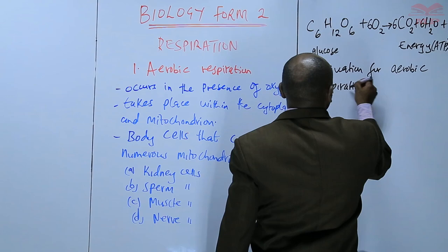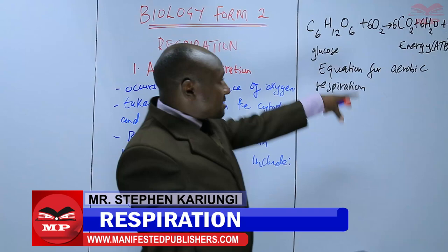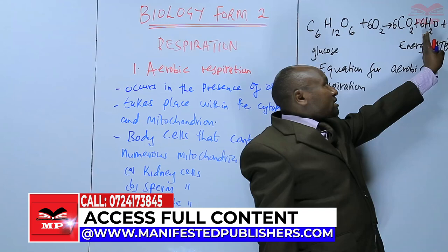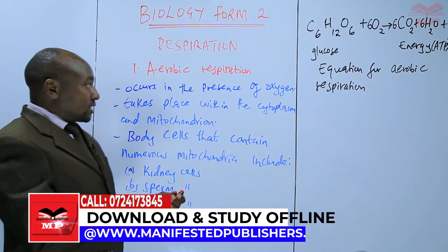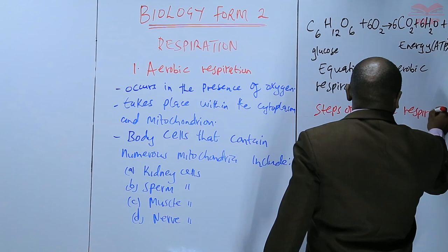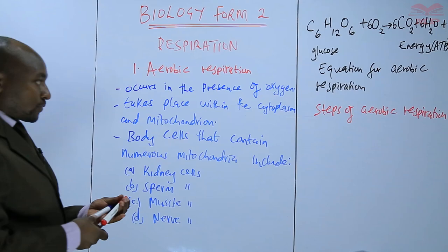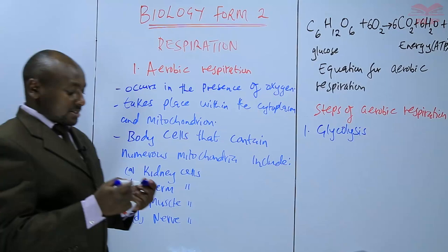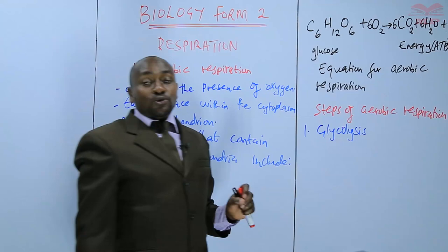In as much as that equation summarizes aerobic respiration, aerobic respiration is not just a one-step process whereby glucose combines with oxygen to form carbon dioxide, water, and energy. It has a series of steps, which we call the steps or phases of aerobic respiration. There are two steps. The first step we refer to as glycolysis, and in this process the glucose is first broken down in the absence of oxygen.